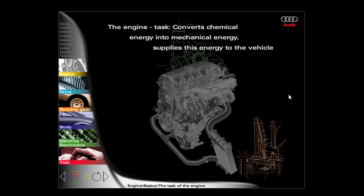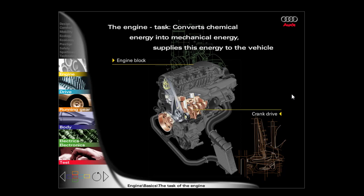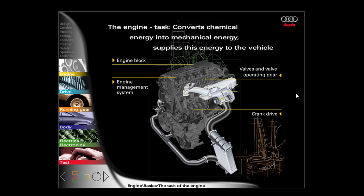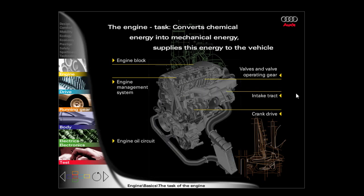The engine has the task of converting the chemical energy of the fuel into mechanical energy via combustion and making this available to the vehicle's drive. The main components of the engine are the crankcase, the crank drive, the valves and valve operating gear, the engine management system and the intake tract. In addition, the engine requires the following auxiliary equipment: the engine oil circuit, the cooling system and the exhaust system.